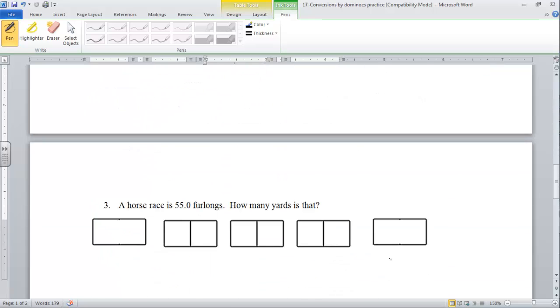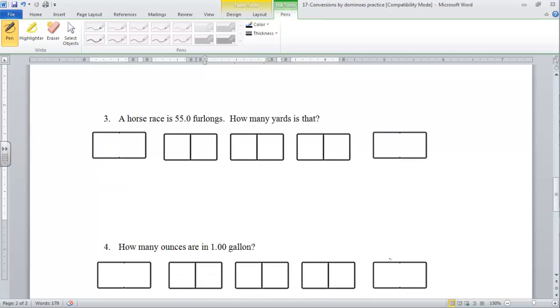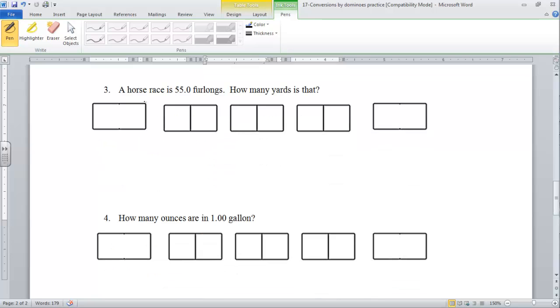Let's go ahead and take a look at number three. The problem reads: I have a horse race that is 55.0 furlongs, and how many yards is that? So we're going from furlongs that we're starting with and we want to end in yards. This is how you set up your dominoes initially - we're going from our starting spot to our ending spot.